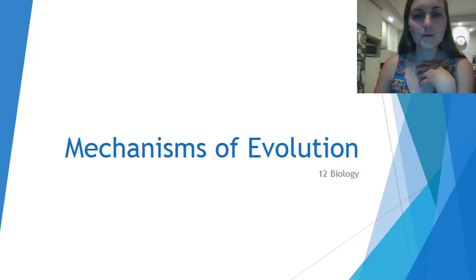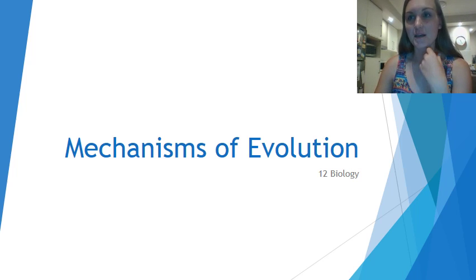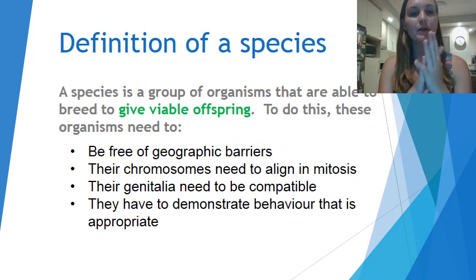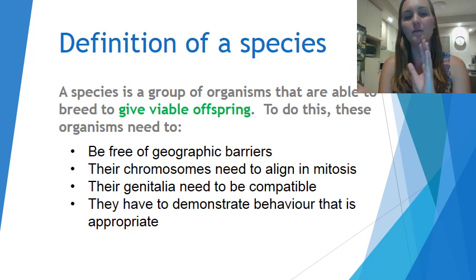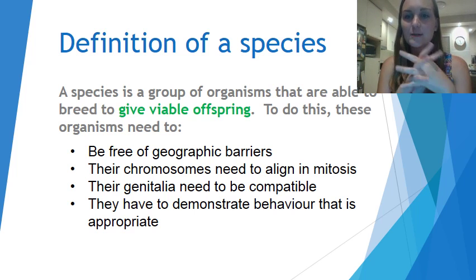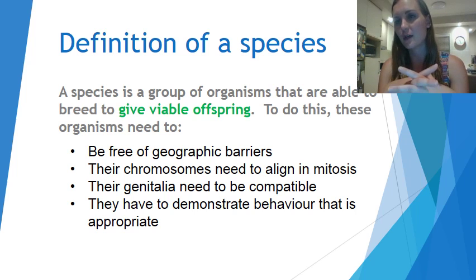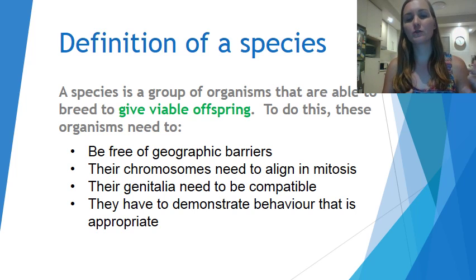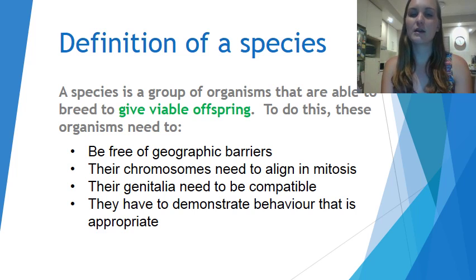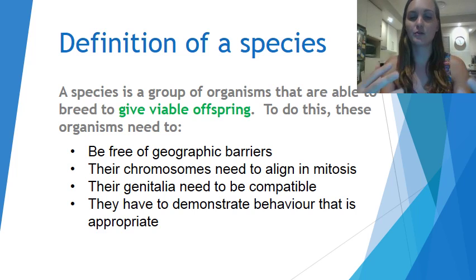Hello everyone, welcome to another session. We're looking at the mechanisms of evolution today. In class we've discussed what a species actually entails and came up with the definition: a species is a group of organisms that are able to breed to give viable offspring, meaning the offspring can survive and reproduce themselves. For example, a mule — which results from a horse and a donkey breeding — is not a species because it cannot reproduce itself.